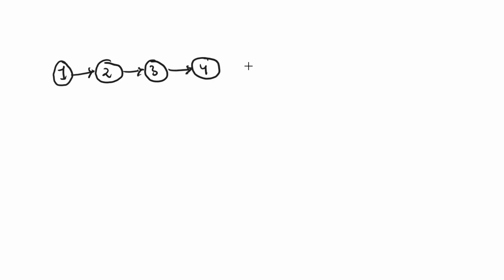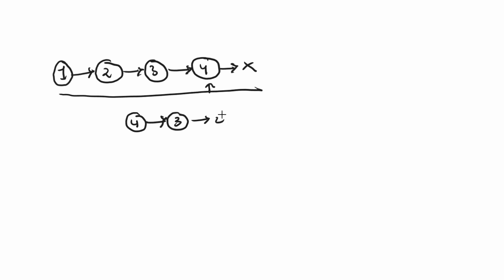Let me give an example with a neat sketch. This is a linked list. This is a node linked to the next node, and this is the last node pointing to None. This is the representation of the linked list. Now in reverse order: the last node is 4, so 4 should point towards 3, 3 should point towards 2, 2 should point towards 1, and 1 should point towards None. This is the reversing of a linked list.